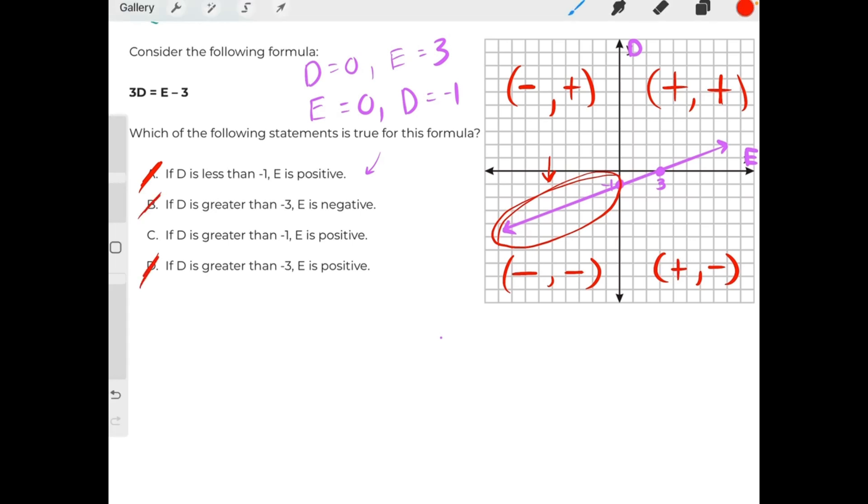Leaving only one possible correct answer, but we will still double check it just to make absolutely sure. If d is greater than negative 1, then e is positive. Greater than negative 1 are all of these values over here. e is our x value, and they're saying that e is positive when we are greater than negative 1. And that is true because all of these values in the blue area are all positive, making C our correct answer.